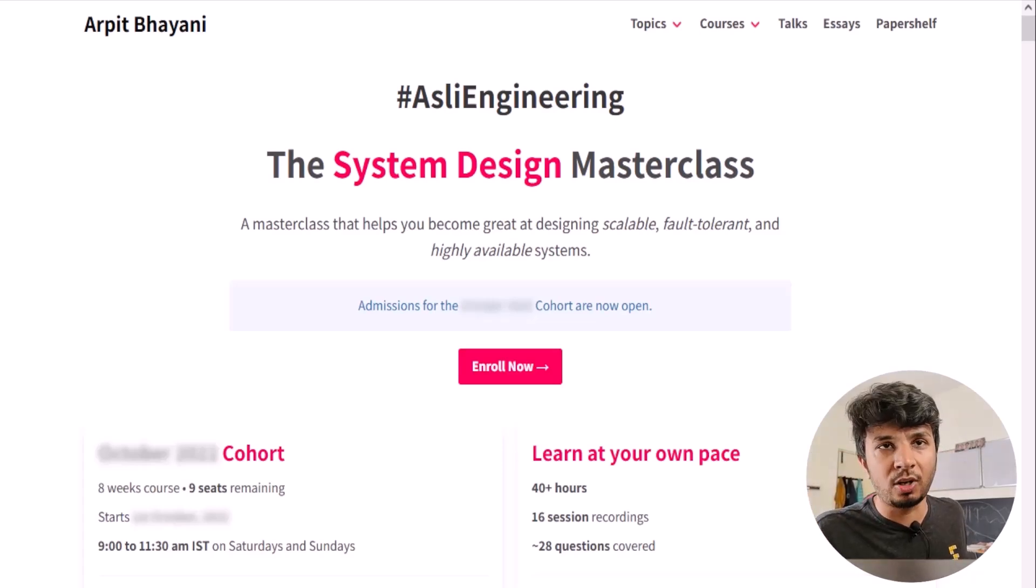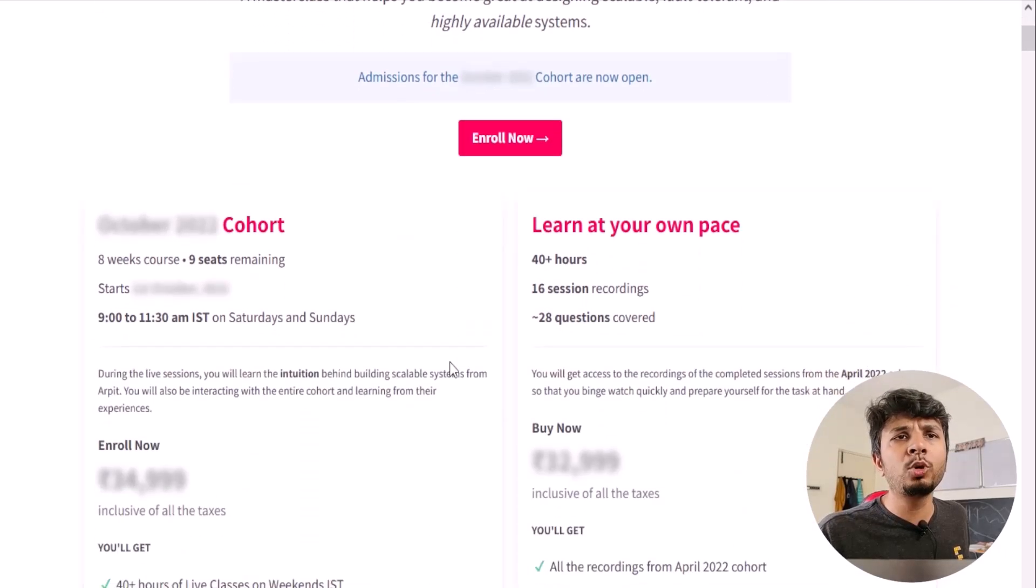If you're looking to learn system design from the first principles, you will love this course. I have two offerings for you: the first one is the live cohort-based course and the second one is the recorded offering. The live cohort-based course happens once every two months and will go on for eight weeks, while the recorded course contains the recordings from one of the past cohorts as is.